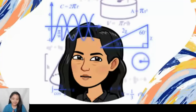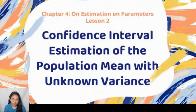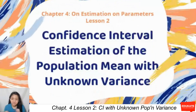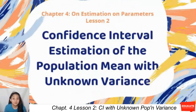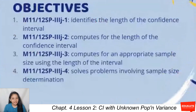Welcome back everyone to another lesson in statistics and probability. Our lesson for today is on estimation of parameters. In Chapter 4, we have confidence interval estimation of the population mean with unknown variance.